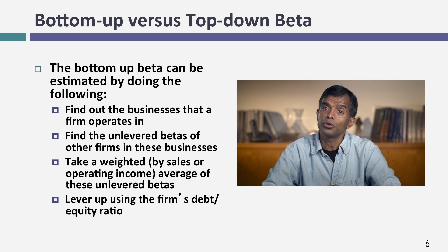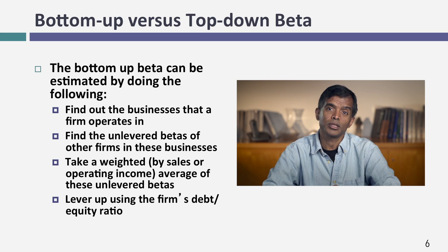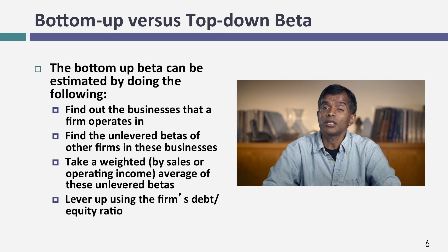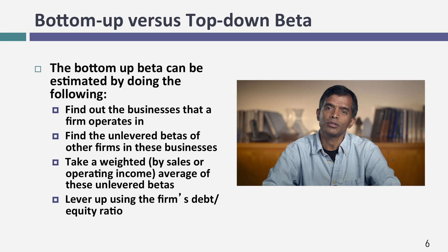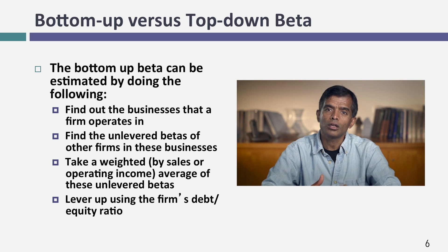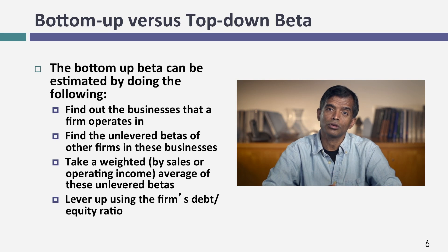Some people call these pure play betas to reflect the betas for the businesses. Then I come back to you — you told me you're in two businesses, so tell me how much value you get from each. You might say 70% from steel, 30% from chemicals, or just give me revenues. I take a weighted average, and that's the unlevered beta for your company. Final step: I ask for your debt-to-equity ratio — your actual, a target, or some number in the middle — and I'll tell you what the beta for your stock should be.